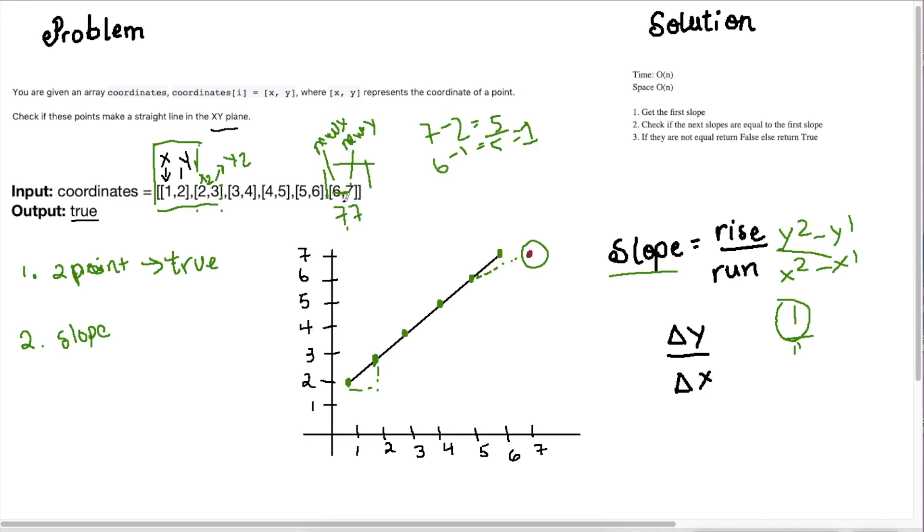So my new x is 7 and my new y is 7. Now we do 7 minus 2, which is 5, and then 7 minus 1, which is 6. So this is not equal to our initial slope, which is 1, right? So in this case, the answer would be false. So if you understand these two concepts and how to apply them, then the code is pretty straightforward. Okay.